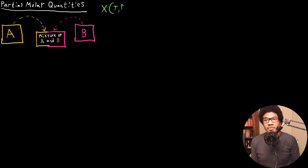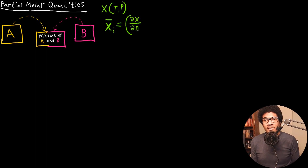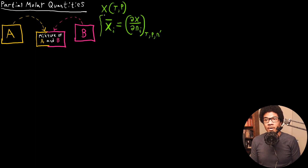Let's take a general thermodynamic variable — let's just call it x. Let's say that x is a function of temperature and pressure. We can define the partial molar quantity for x. I usually use x-bar for molar quantity, just like we did for the molar Gibbs energy or molar volume. That same notation carries over for partial molar quantities as well. So we will have x-bar sub i for component i, defined as the change in x with respect to the changing number of moles of component i at constant temperature, pressure, and with every other component held constant.